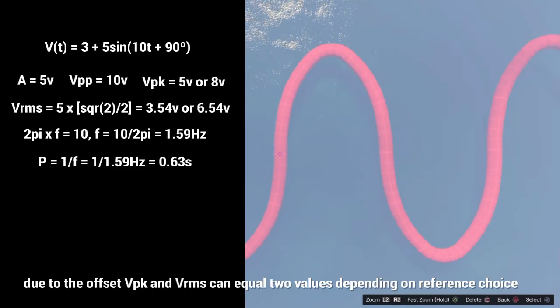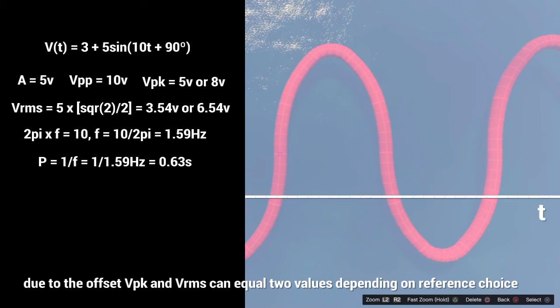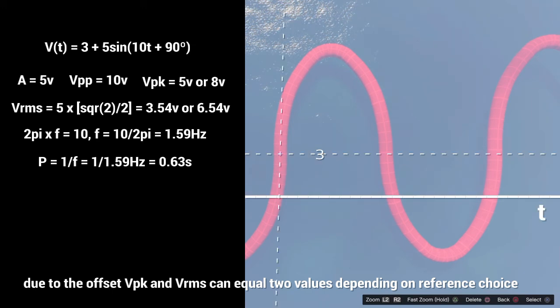Alright, for a final question, we've got V(t) = 3 + 5sin(10t + 90°). We can see there's a 3, which means the whole graph is going to shift up by 3. We see the 90° at the end, which means the graph is going to shift to the left by 90 degrees.